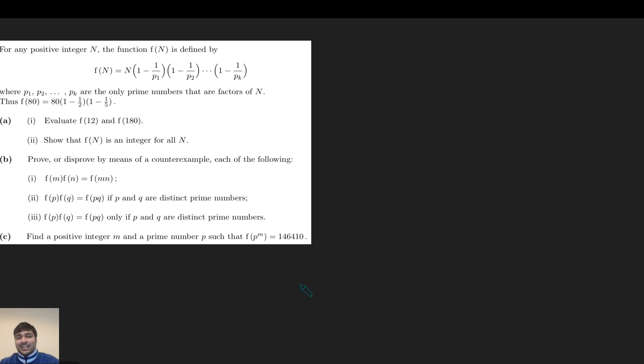For any positive integer n, the function f(n) is defined by f(n) equals n times (1 minus 1/p1) times (1 minus 1/p2), all the way up to (1 minus 1/pk), where p1, p2, up to pk are the only prime numbers that are factors of n. Thus, f(80) for example is 80 times (1 minus 1/2) times (1 minus 1/5), because 2 and 5 are the only prime factors of 80.